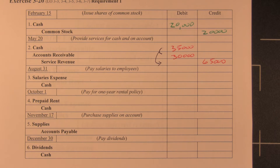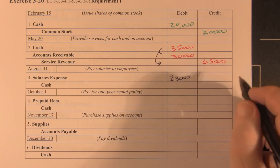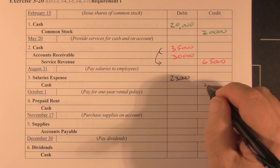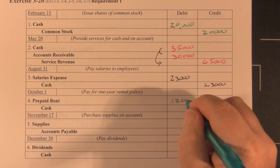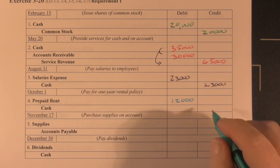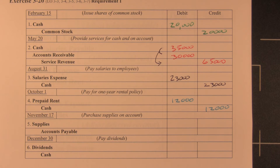On August 31st, we paid salaries to our employees: a $23,000 debit to salary expense and a $23,000 credit to cash. That never goes to salaries payable because we paid them. Then on October 1st, we rented space for the year for $12,000 — a $12,000 debit to prepaid rent and a $12,000 credit to cash.